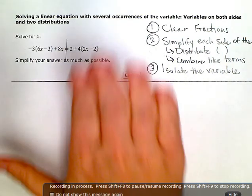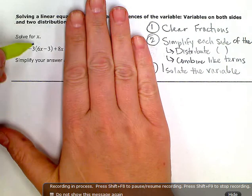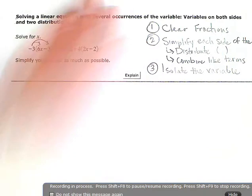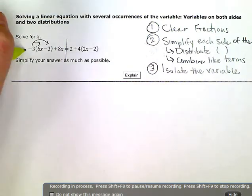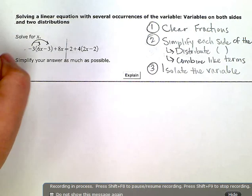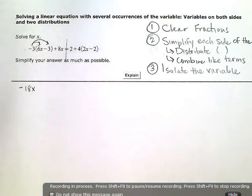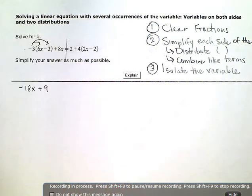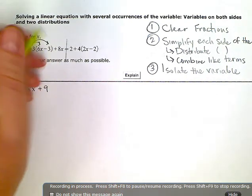Over here, I have a set of parentheses, which means I'm going to have to distribute. If I distribute here, negative three times positive 6x is negative 18x, and negative three times negative three is plus nine. Then I have this plus 8x term.